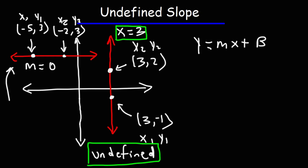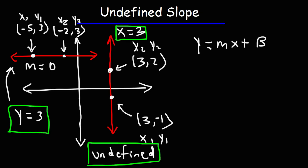Whenever you want to write the equation of a horizontal line, focus on the y value. Notice that the y value doesn't change — in this case it's always positive three — so we simply write y equals three. That's how you can write the equations of a horizontal line and a vertical line; you don't need to use the slope in order to write those equations.